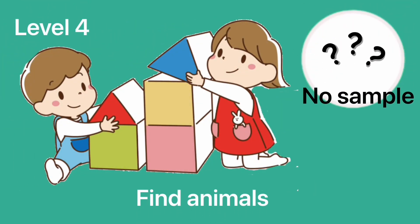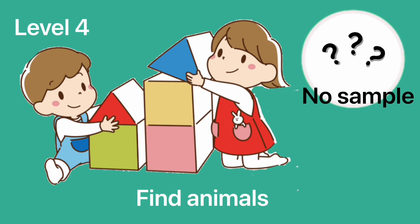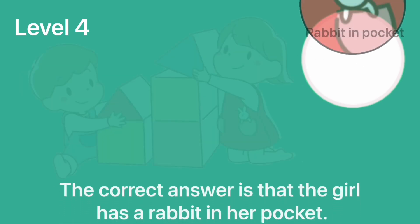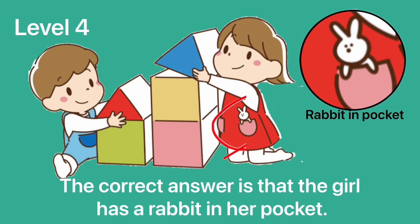Level 4. Find animals. The correct answer is that the girl has a rabbit in her pocket.